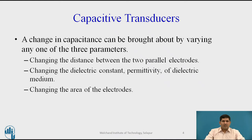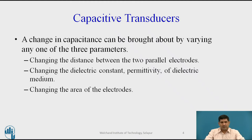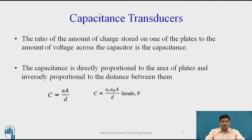A change in capacitance can be brought about by varying any one of the three parameters — either changing the distance between the two parallel electrodes, or by changing the dielectric constant, the permittivity, or the dielectric medium, or changing the area between the electrodes.